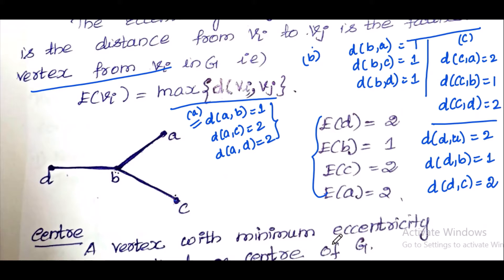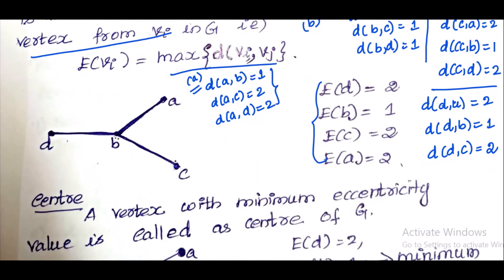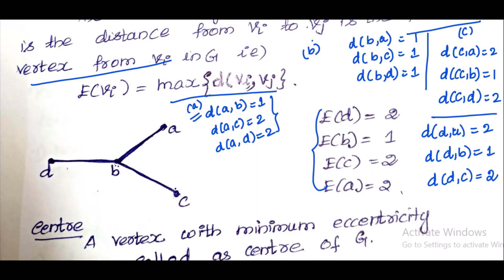This is eccentricity — it is the longest distance from a vertex. Consider: a distance from a vertex gives a length. Eccentricity of A — what is the longest distance? The answer is 2. Eccentricity of B — the longest distance is 1 because every adjacent distance is 1. Answer is 1.